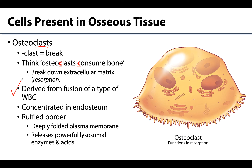Osteoclasts can be found in numerous areas of the bone, but they are most concentrated in the endosteum — that thin membrane lining the internal portion of the bone. The cell has a very distinctive ruffled border facing the actual bone surface. When needed, it will release lysosomal enzymes and acids that will break down and digest the extracellular matrix components. This breakdown is referred to as bone resorption.